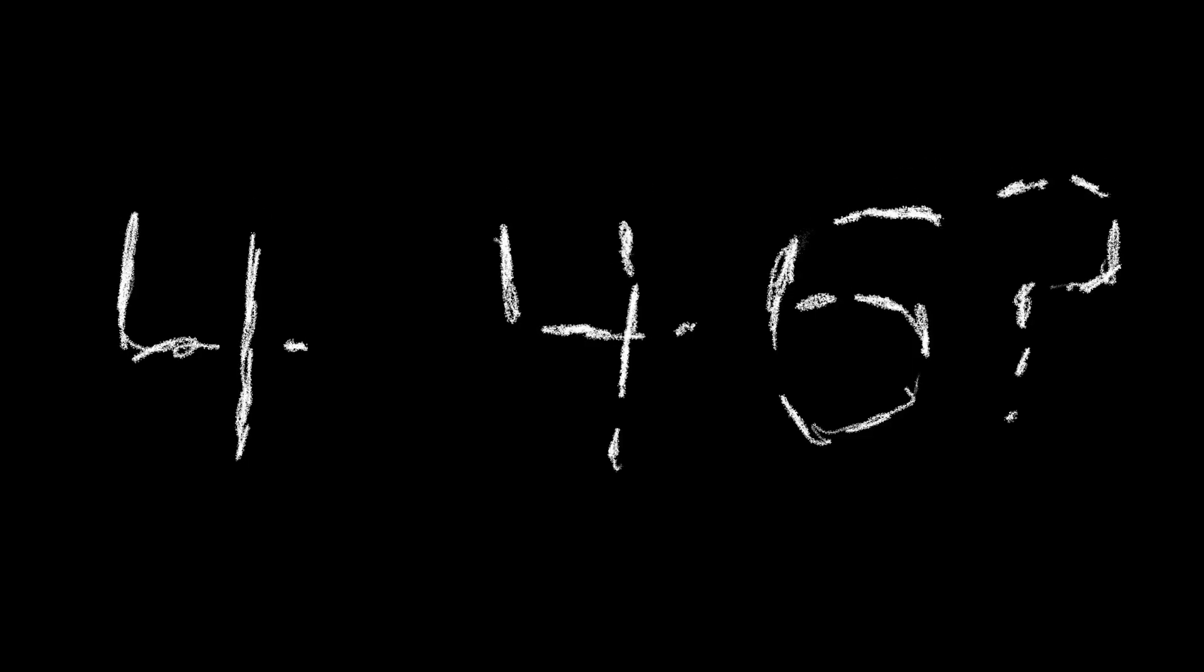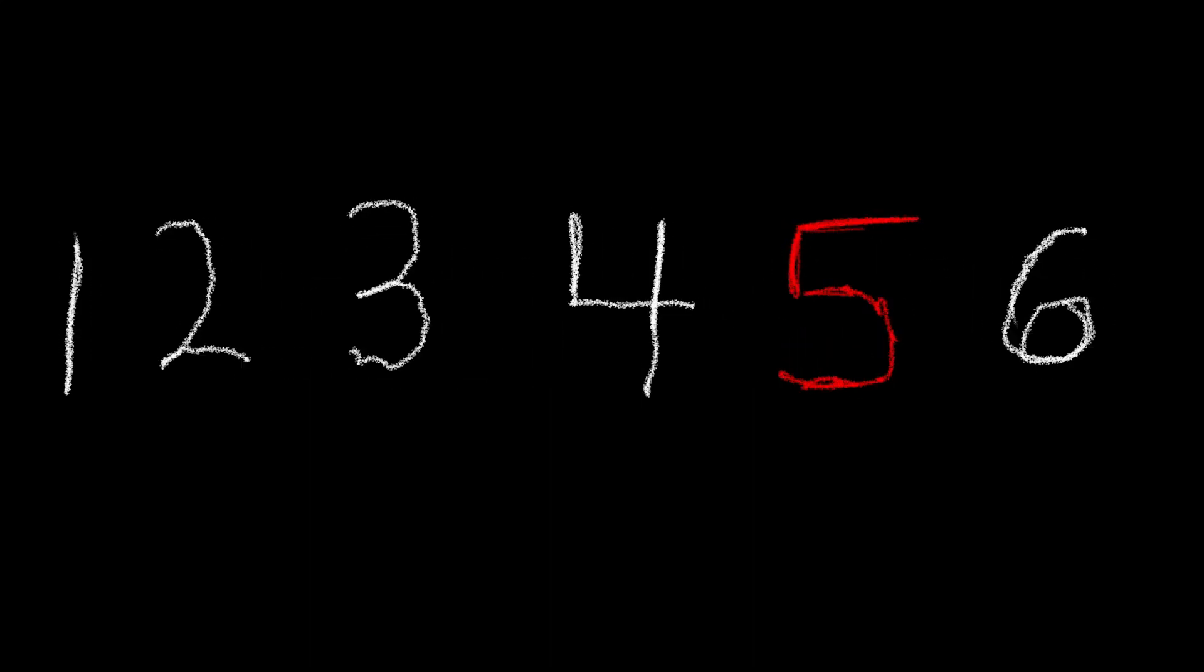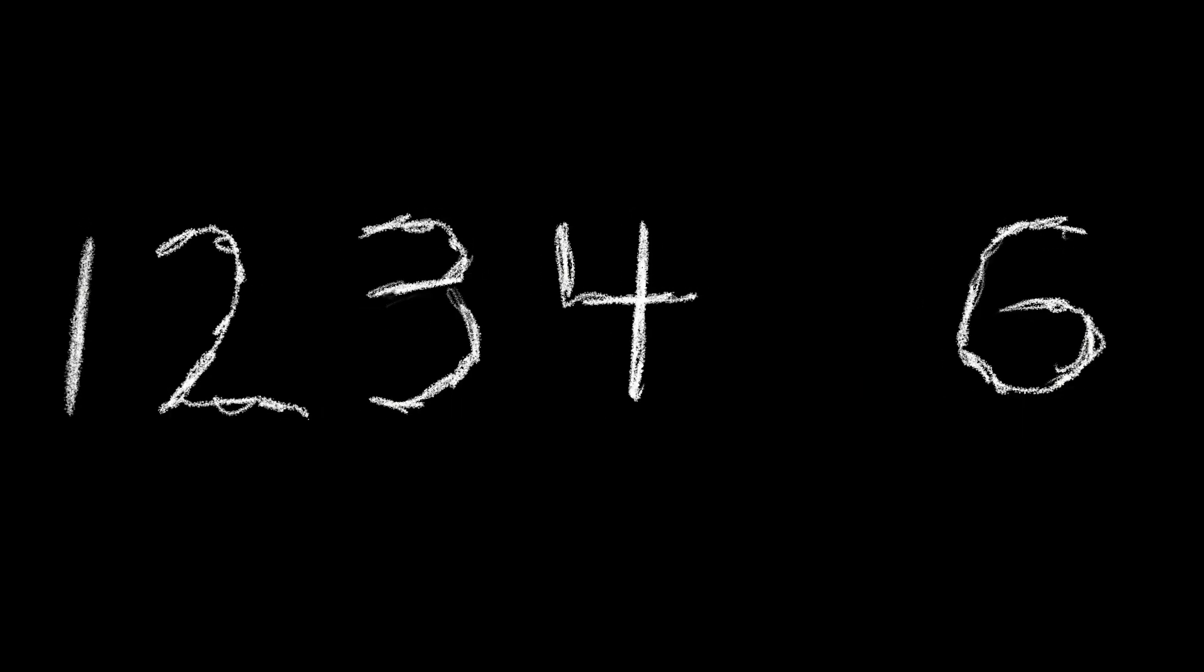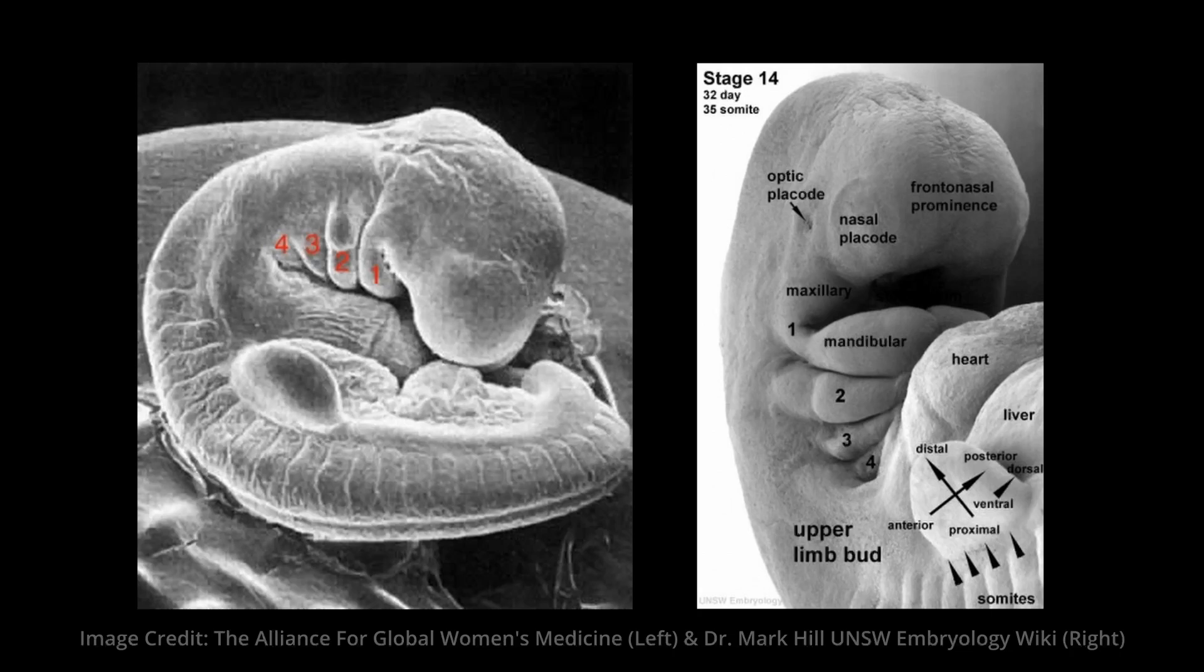If you caught the numbers 4, 4, 6, you might be thinking, wait, what? Here's the deal. While there are technically six pharyngeal arches, the fifth arch doesn't actually form any adult structures and quickly disintegrates. We call that obliterates. Also, arches four and six are nearly indistinguishable, so we'll treat them as a pair.